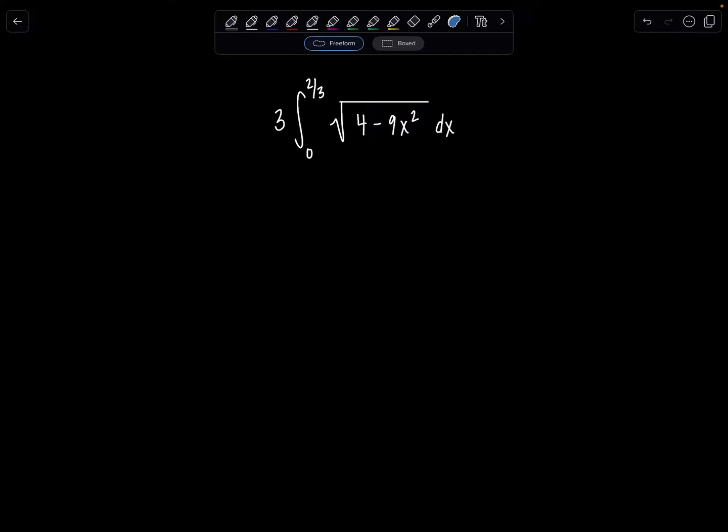So we have here a definite integral, 3 times the definite integral from 0 to 2/3 of the square root of 4 minus 9x² dx. Hopefully you recognize right off the bat this is the time to use trig sub because I look underneath the radical and I have that quadratic expression and there is no x to the first or something sitting outside for me to do a u sub.